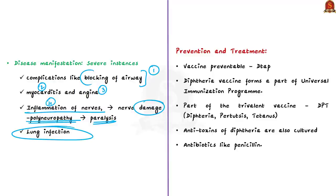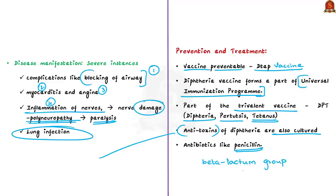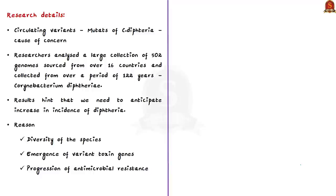Fortunately, diphtheria is vaccine preventable. In India, diphtheria forms part of the Universal Immunization Program as part of the trivalent DPT vaccine, which stands for Diphtheria, Pertussis, Tetanus. Anti-toxins of diphtheria are also cultured and available as a mainstay of treatment. The bacteria are susceptible to antibiotics like penicillin, which belongs to the beta-lactam group. These antibiotics act on the beta-lactam-based bacterial wall to ultimately kill the bacteria.